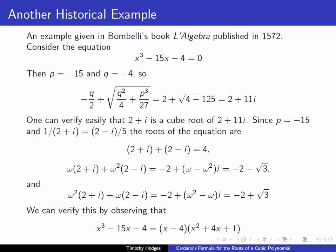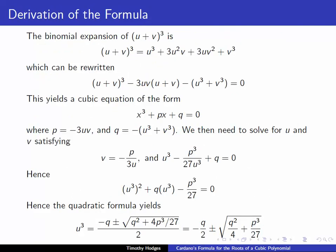Let's have a quick look at the derivation of this formula. How did they come up with this formula? They did it in the following way. Look at the binomial expansion of u plus v cubed. It's u plus v cubed equals u cubed plus 3u squared v plus 3u v squared plus v cubed. We can rewrite that as u plus v cubed minus 3u v u plus v minus u cubed plus v cubed.